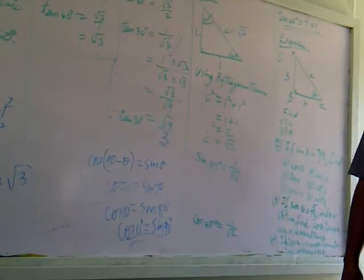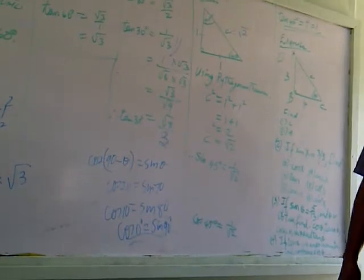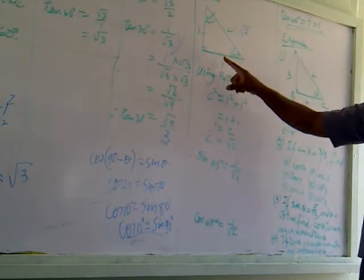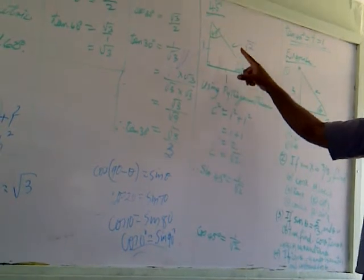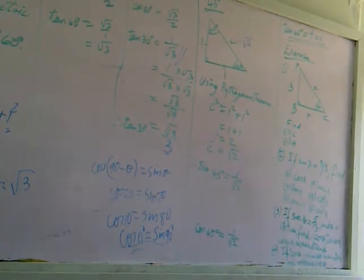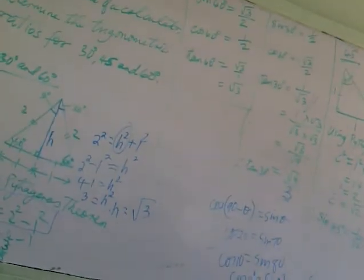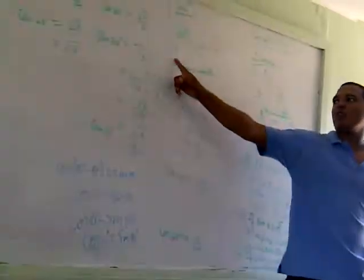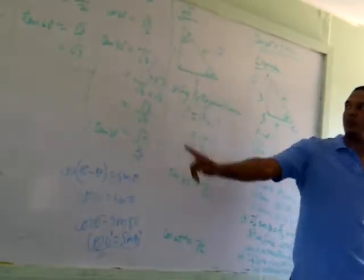Finding the trig ratios: the sine of 45 is opposite upon hypotenuse, that's 1 over root 2. The hypotenuse is always opposite the right angle.